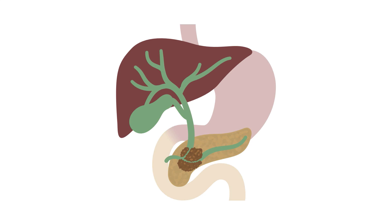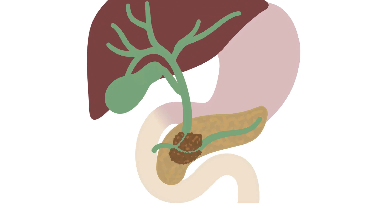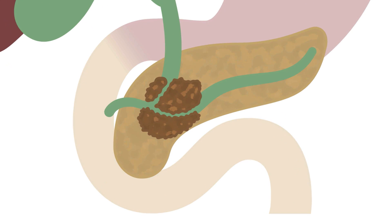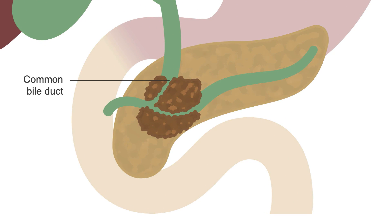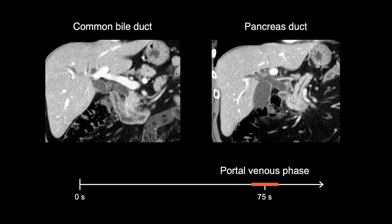In many cases of pancreas adenocarcinoma, the primary tumor can be difficult to see. The best way of determining its boundaries is to look for the point where the common bile duct or pancreas duct change size due to obstruction caused by the tumor. In this patient, both the common bile duct and the pancreas duct are obstructed by a pancreas head adenocarcinoma, referred to as the double duct sign.